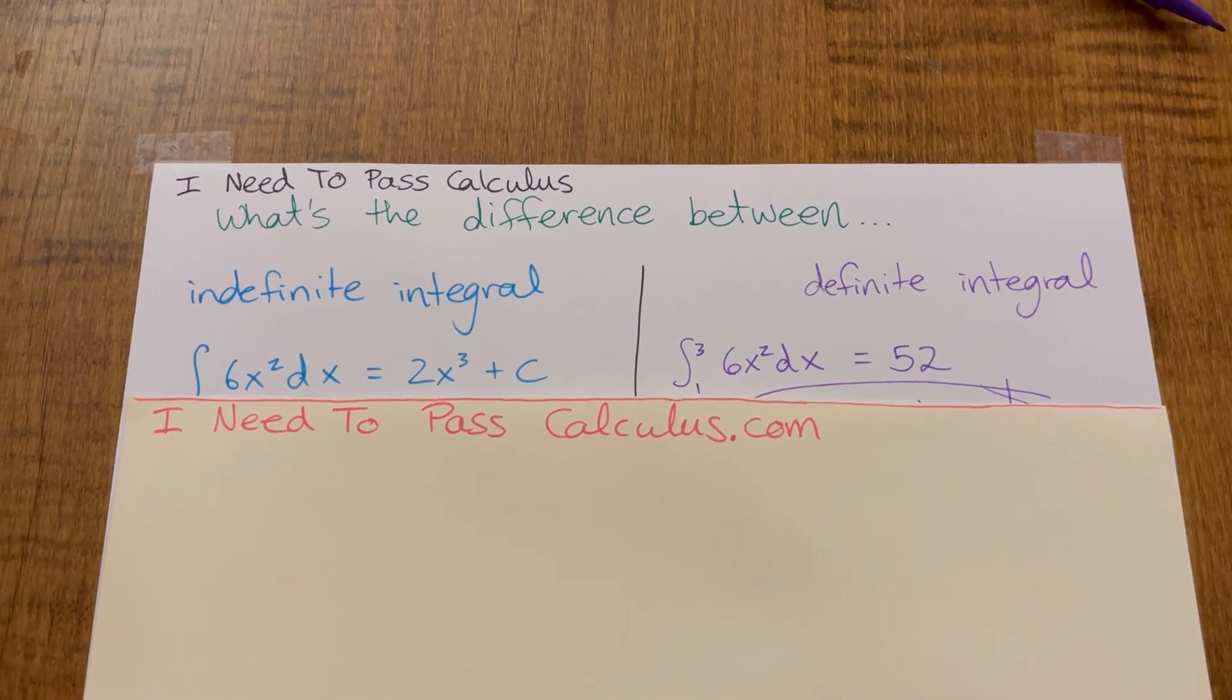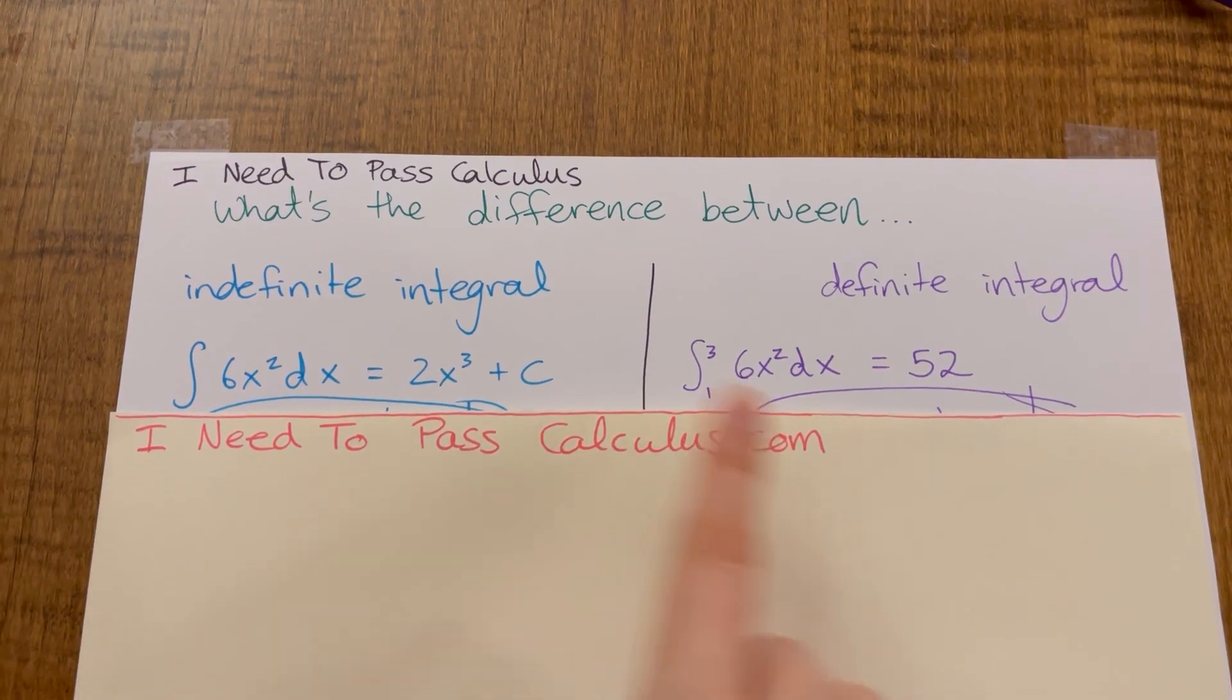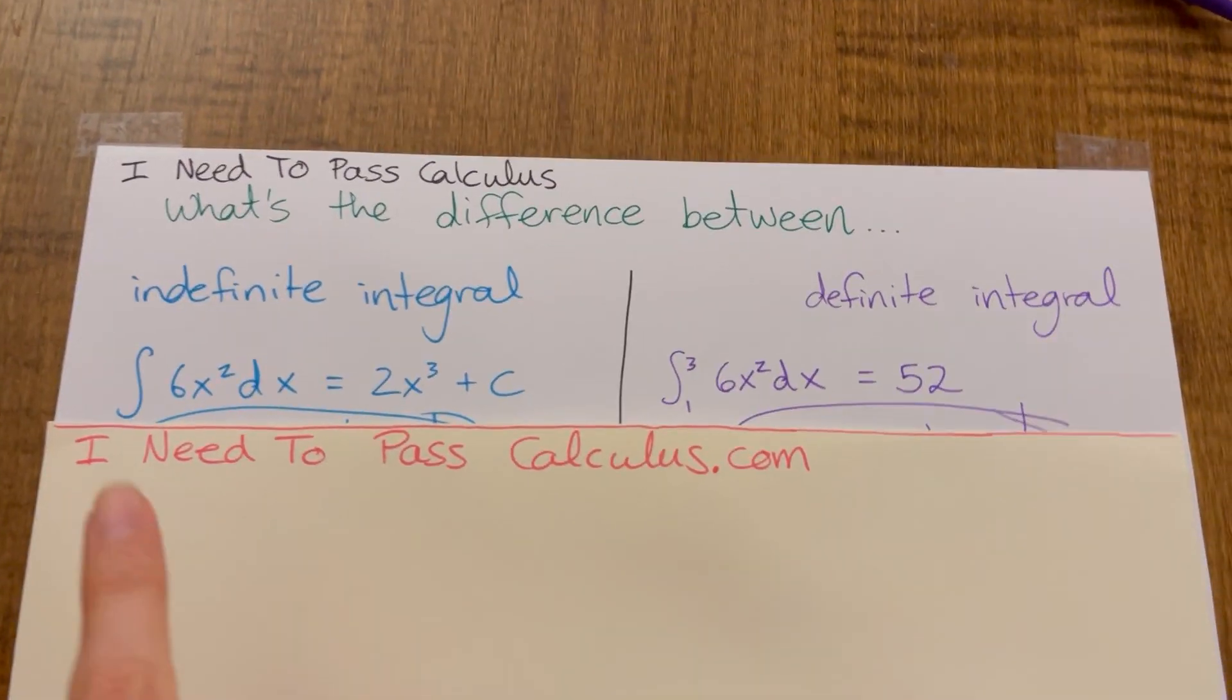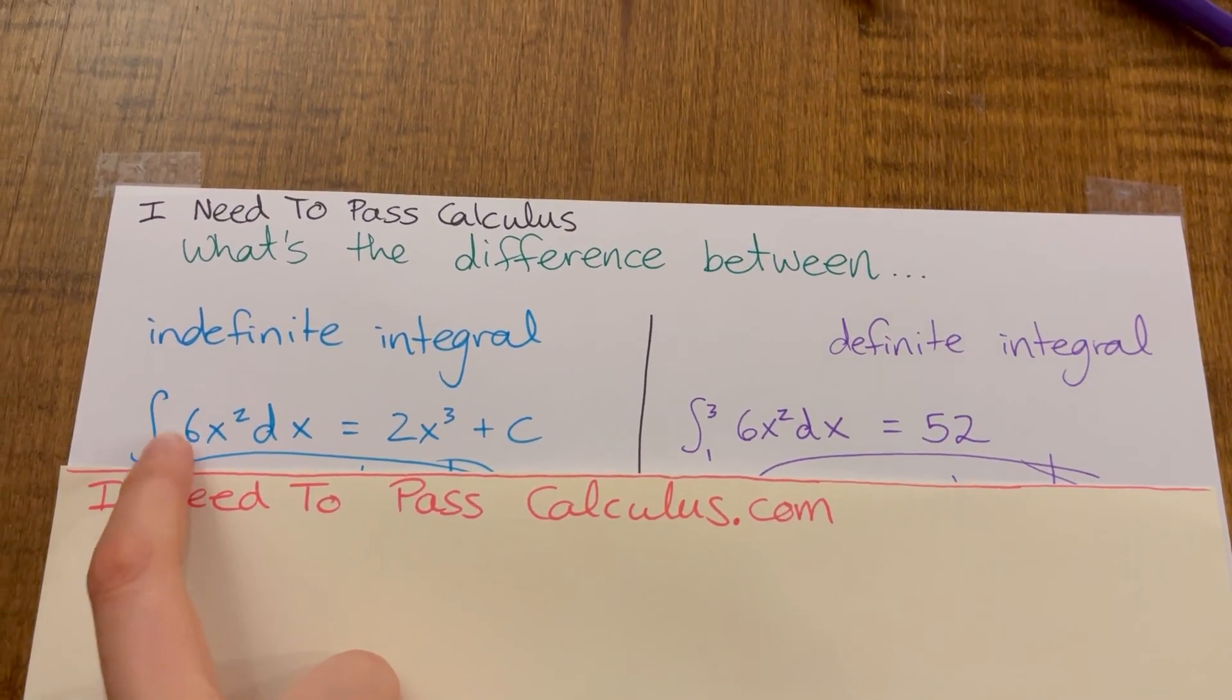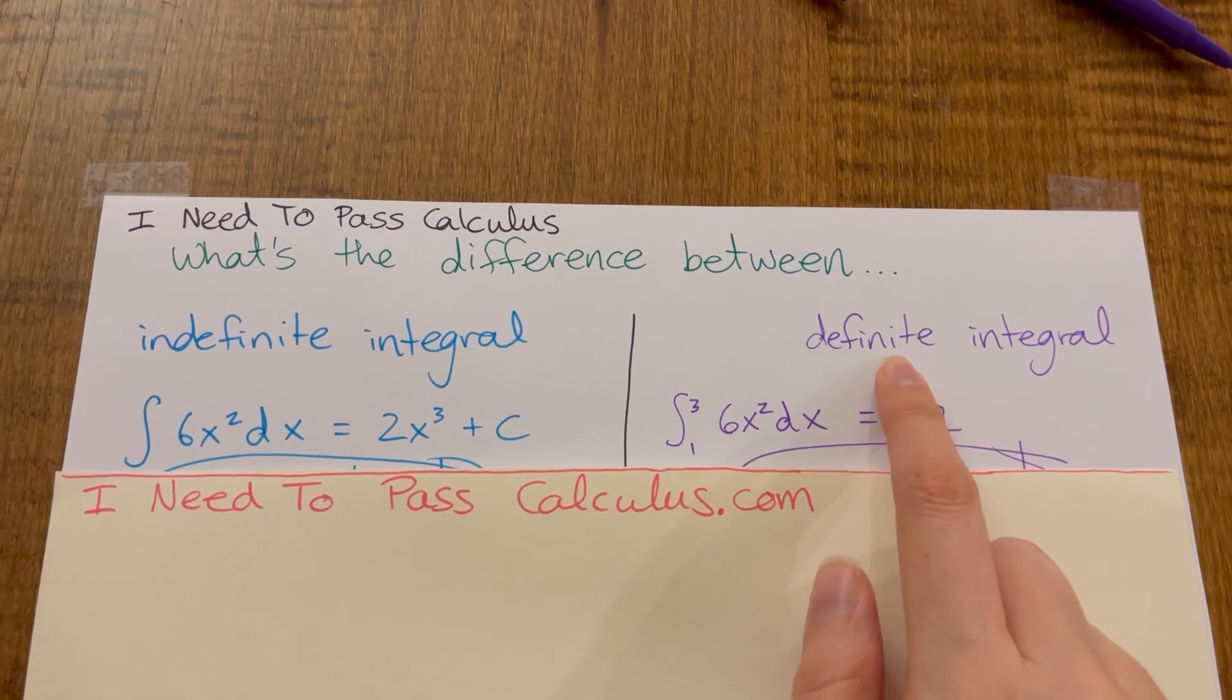It can be a little hard to understand what exactly is the difference. They look almost the same. If you look really carefully there's a slight difference. Indefinite integrals never have numbers here on the integral symbol, and definite integrals always have numbers here on the integral symbol.